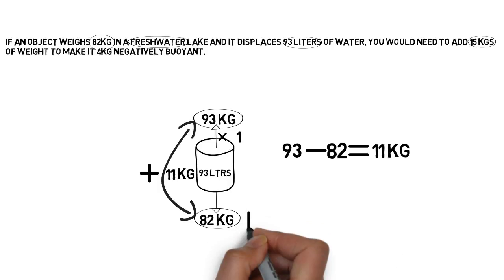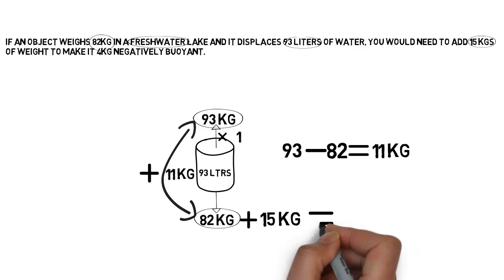So basically what we need to do is add 15 kilograms of weight to the existing downward force of 82 kilograms. And that gives us a new downward force of 97 kilograms.